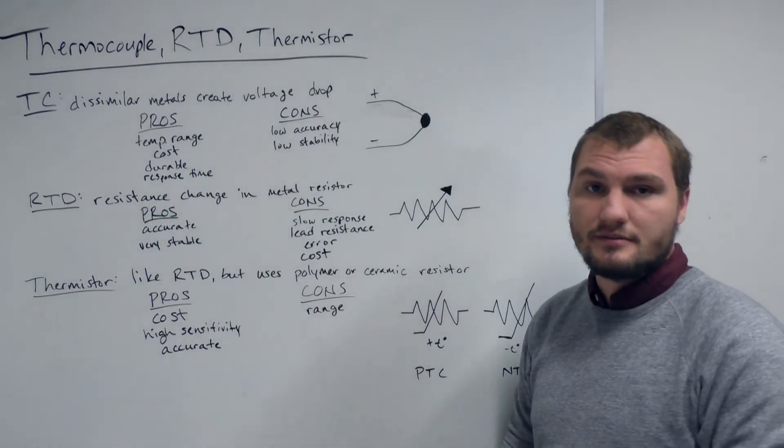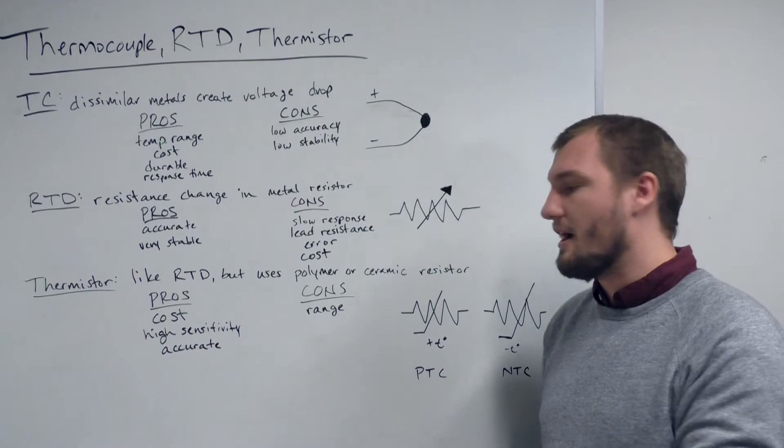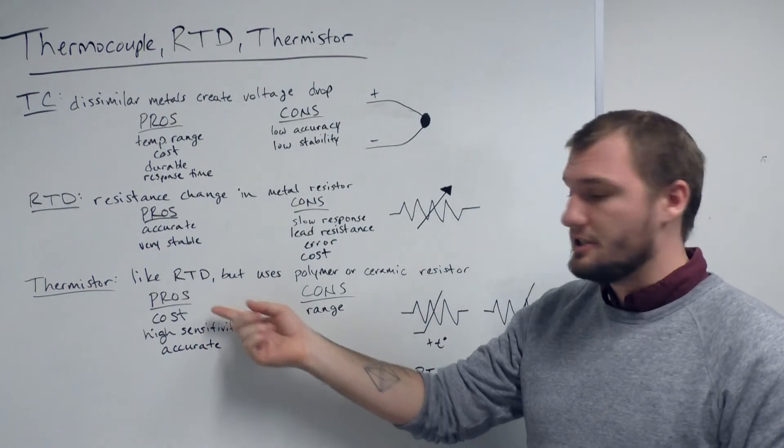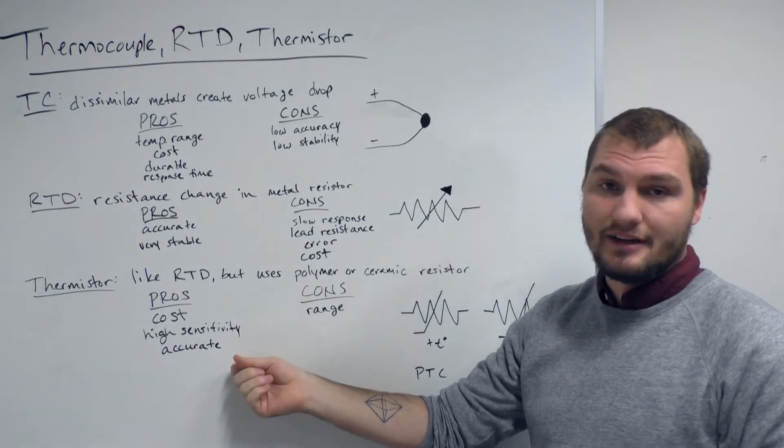Then there's thermistors, which are similar to RTDs, but rather than using a metal wire, they use polymer or ceramic resistors instead. These tend to be relatively cheap, very sensitive, and very accurate.